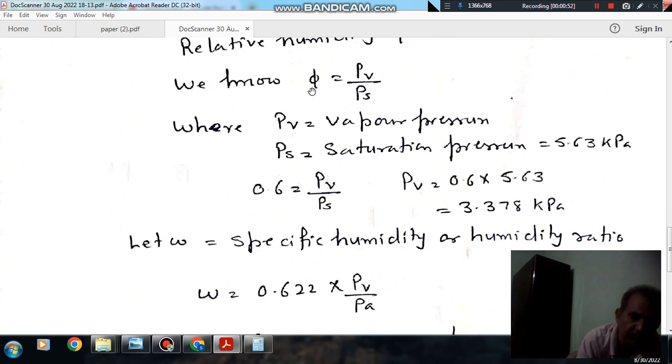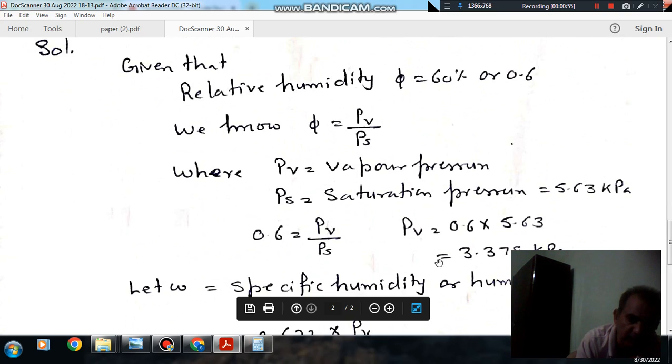From the given relative humidity, we can find PV, which is 3.378 kPa.